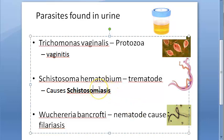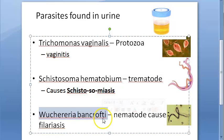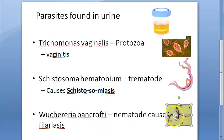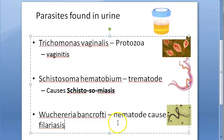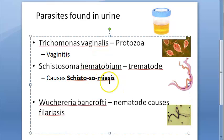Then you have Wuchereria bancrofti, which is a nematode. It causes filariasis. If it is lymphatic filariasis, it is called elephantiasis.